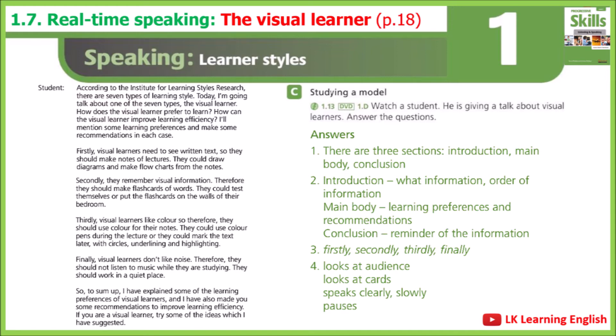Thirdly, visual learners like color, so they should use color for their notes. They could use color pens during the lecture, or they could mark the text later with circles, underlining, and highlighting. Finally, visual learners don't like noise; therefore they should not listen to music while studying and should work in a quiet place. To sum up, I have explained some learning preferences of visual learners and made some recommendations to improve learning efficiency. If you are a visual learner, try some of the ideas I have suggested.